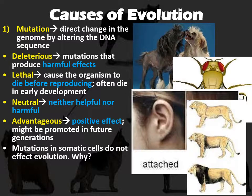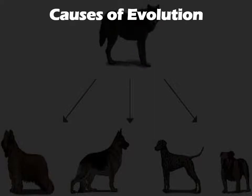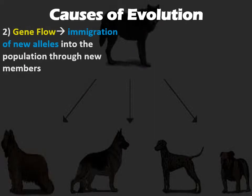Mutations in somatic cells don't affect evolution — remember, somatic means your body cells. Only the mutations in your gametes actually get passed on. So when we're talking about mutations that drive evolution, of course they have to be something that is inheritable.